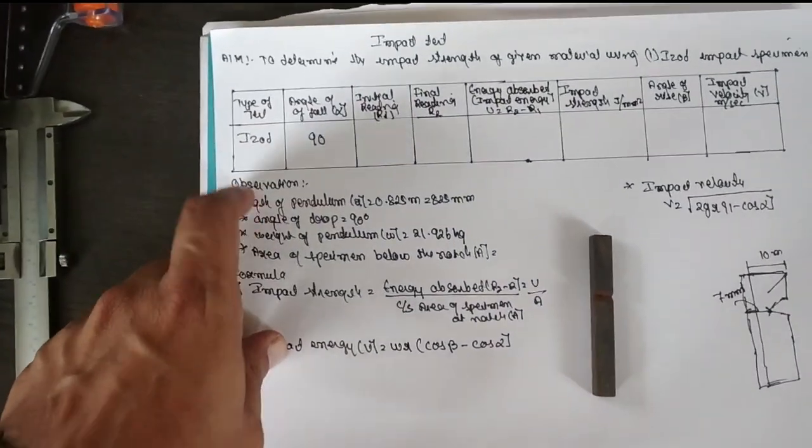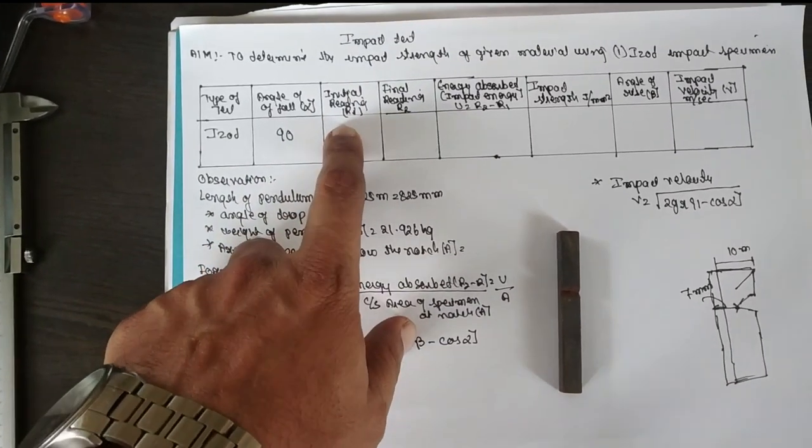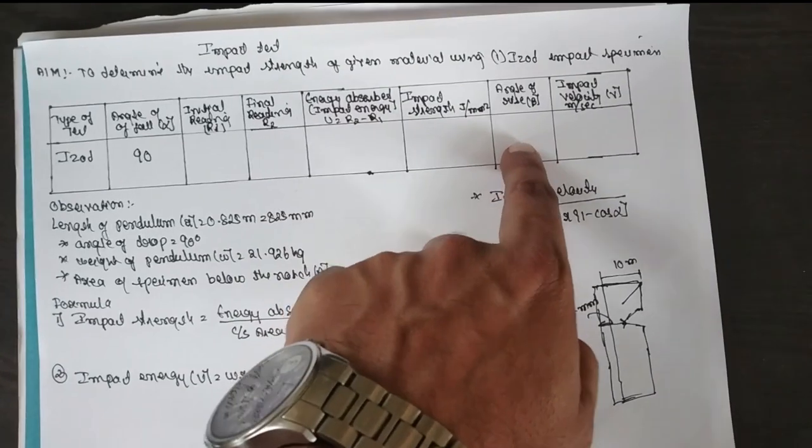This is the table column which contains the type of test, angle of fall, initial reading, final reading, energy observed, impact strength, angle of rise, and impact velocity.